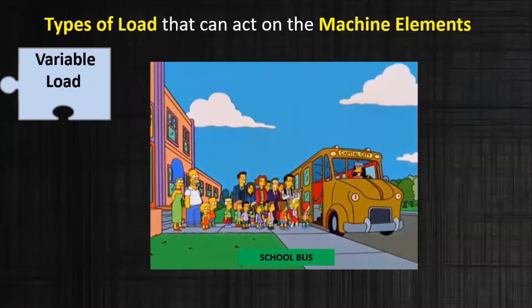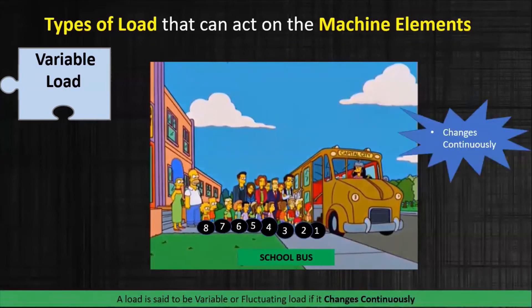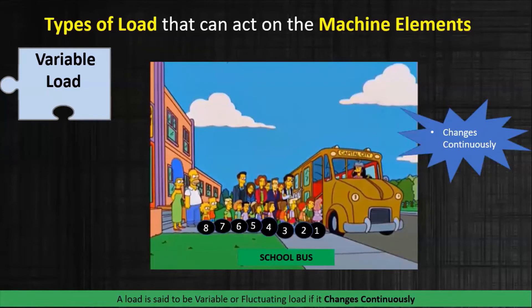Now let's understand what a variable load is. In this picture, students are sitting inside the bus one by one. We know that the number of passengers in the bus is not constant — it keeps changing frequently. Because of this variation, the load also varies. A load is said to be a variable or fluctuating load if it changes continuously.